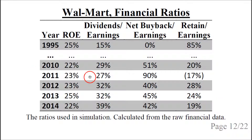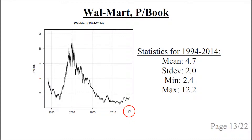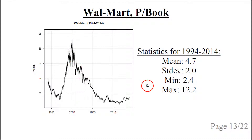Note that in year 2011 we have minus 17%, which means the company spent more on dividends and share buyback net of issuance than it actually earned — so it would have had to borrow money or use previously retained cash. This plot shows the historical price-to-book ratio from 1994 up to 2014, about 20 years. The minimum is about 2.4, the maximum is about 12.2, the mean is 4.7, and the standard deviation is 2.0.